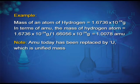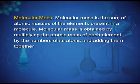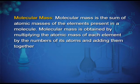Note: AMU (atomic mass unit) has today been replaced by the symbol 'u' (unified mass). Molecular mass is the sum of the atomic masses of the elements present in a molecule, obtained by multiplying the atomic mass of each element by the number of its atoms and adding them together.